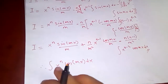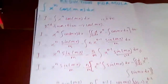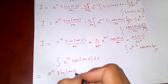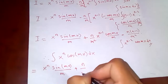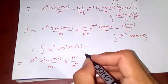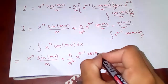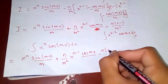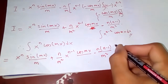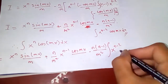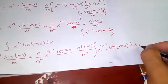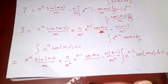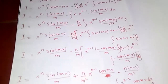This last integral is nothing but our original I form, so expanding we arrive at: I equals x to the n times sin(mx) over m, plus n over m squared times x to the n minus one times cos(mx), minus n times (n minus one) over m squared times the integral of x to the n minus two times cos(mx) dx. And this is our reduction formula for this integral. Thank you.